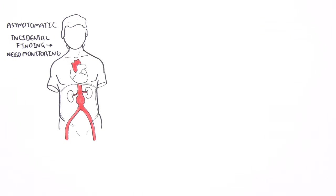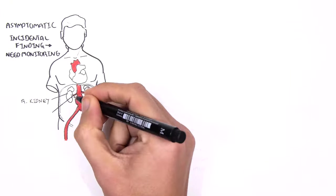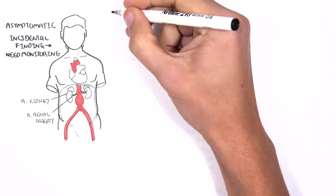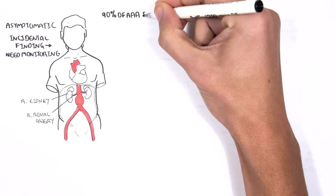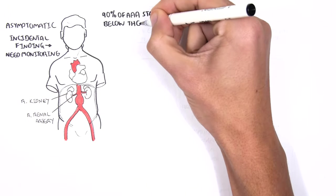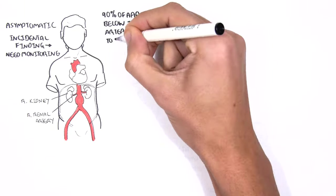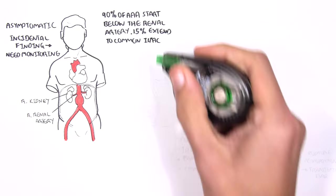If this is the case, it does require monitoring. 90% of AAAs start below the renal artery, and 15% extend to the common iliac arteries.